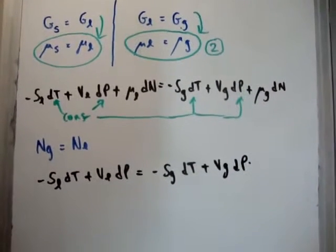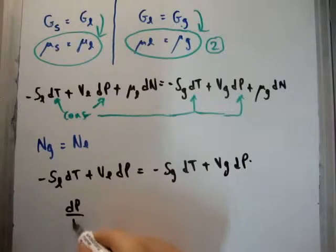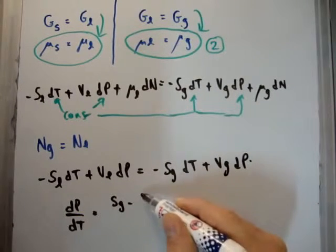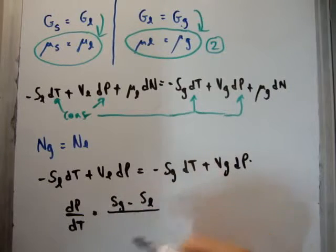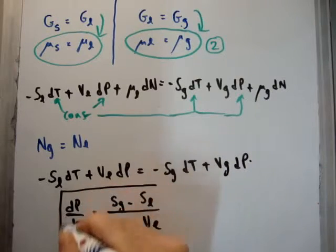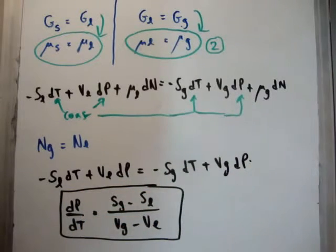If we want, we could rearrange this to make it look much nicer: dP/dT = (S_gas - S_liquid) / (V_gas - V_liquid).